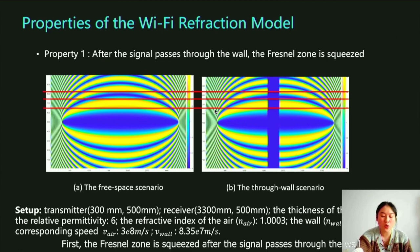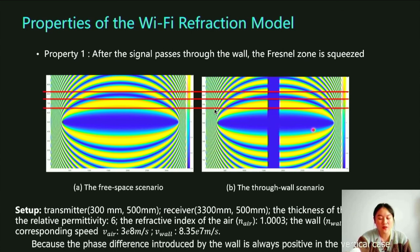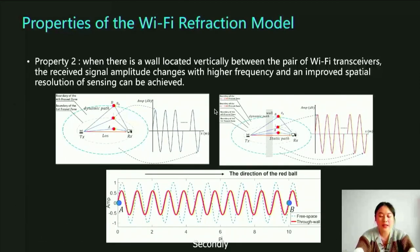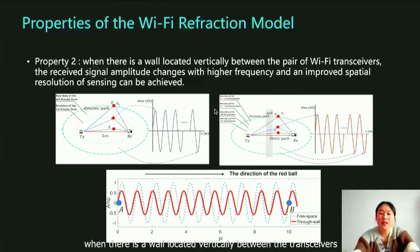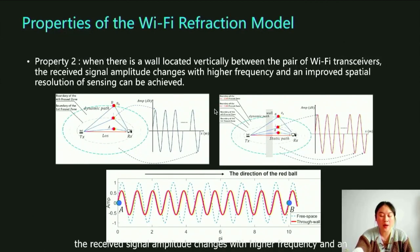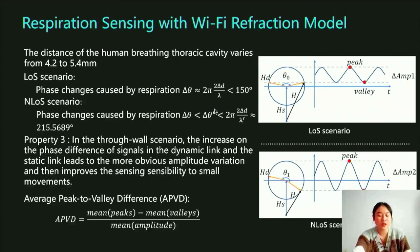First, the Fresnel zone is compressed after the signal passes through the wall, because the phase difference introduced by the wall is always positive in the vertical case. Secondly, when there is a wall located vertically between the transceivers, the received signal amplitude changes with higher frequency and an improved spatial resolution of sensing can be achieved.